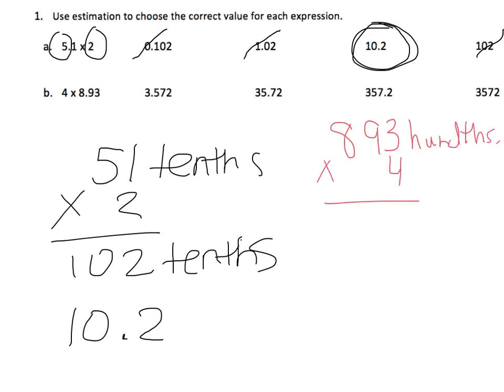Now 4 times 3 is 12. 4 times 9 is 36, plus 1 is 37. 4 times 8 is 32, plus 3 is 35.